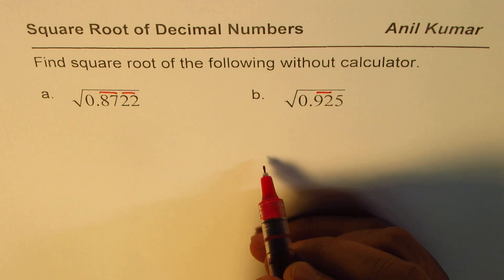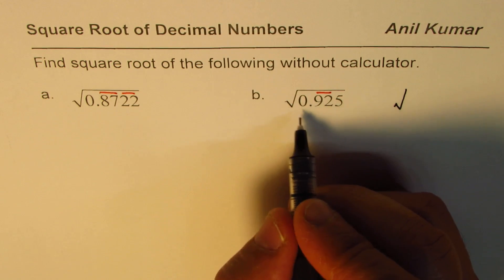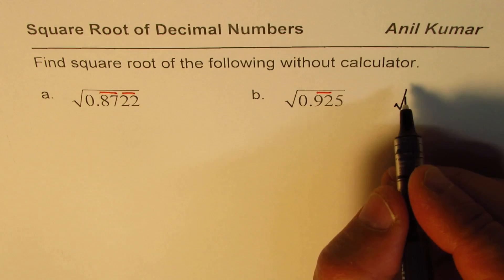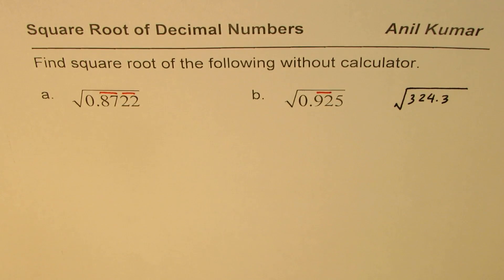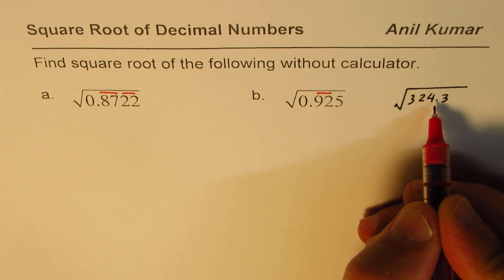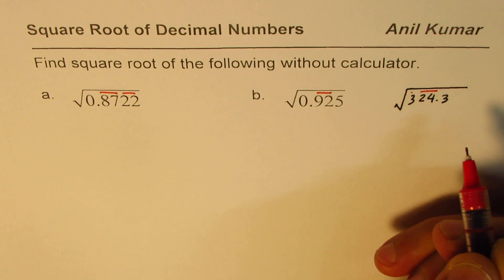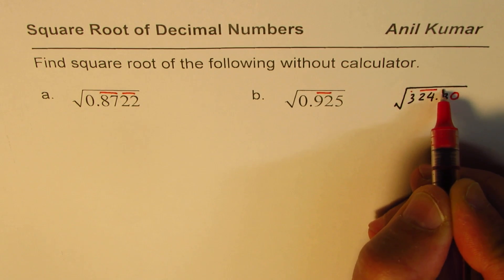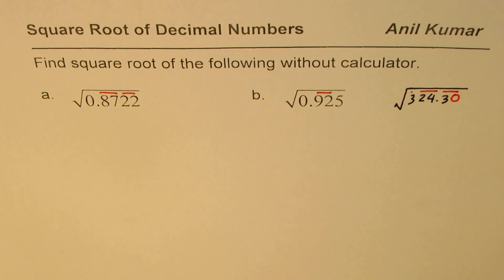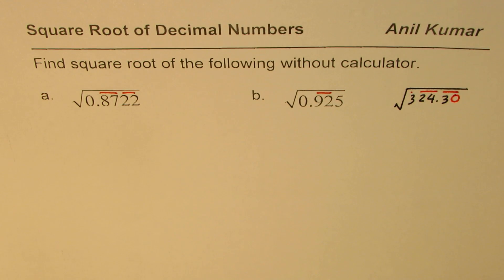For 0.925, the first group will be 92 and then 5. Let me write down one more example with a number up to two or three decimal places — let's say the number is 324.3. In this number, the grouping in sets of two is done moving away from the decimal. On the left side that's the first set, and on the right side only one digit remains, so we add zeros as needed and bring down sets of two. That is the grouping we need to do.